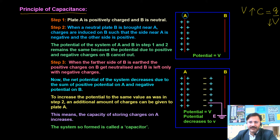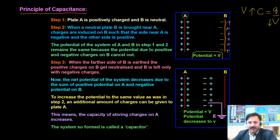To decrease the potential, we bring an identical conducting plate in front of the charged conductor. Due to induction, negative charge will appear on the left side of plate B, and positive charge will be induced on the right side. There is no effect on the potential of plate A at this stage. But when we ground plate B, electrons come from the ground and neutralize the positive charge on its right side.